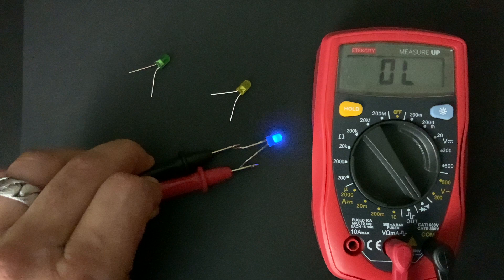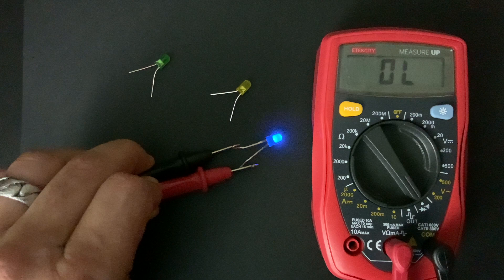The reason you don't get a reading for the blue LED gets a little technical. Needless to say typically you will get a reading with red, yellow, and green LEDs. That's because they have lower forward working voltages.